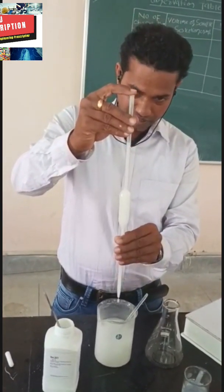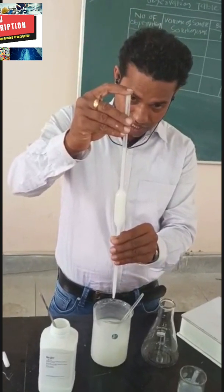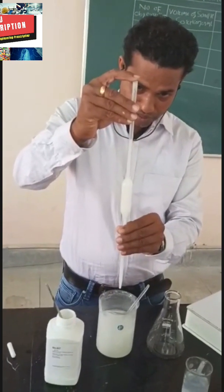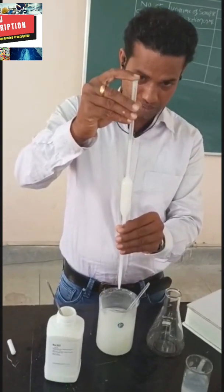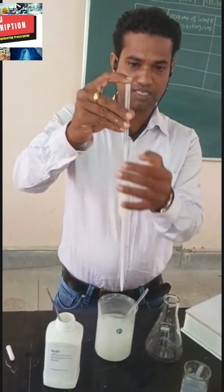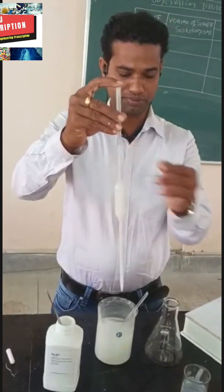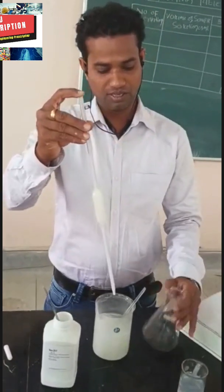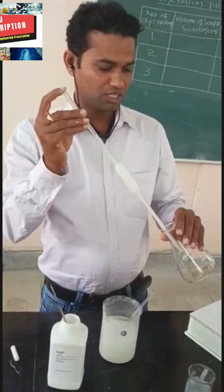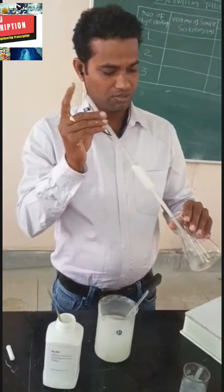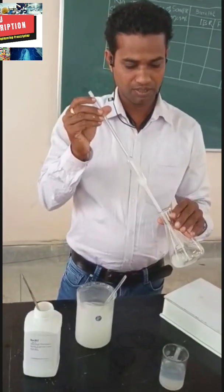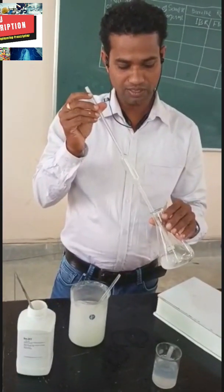We pipette out the sample up to the mark, which is 25 ml — yes, up to this mark is 25 ml. Now transfer to the conical flask.